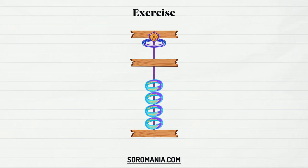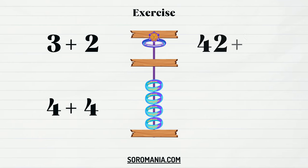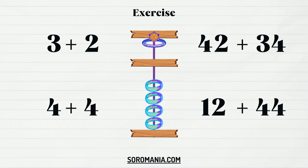Practice is the key to master these rules. Try to perform calculations using the Soroban. You can start with operations of 1 digit, for example, 3 plus 2, or 4 plus 4. Then jump to operations with 2 digits, like 42 plus 34, or 12 plus 44. Then add more and more digits as you can.